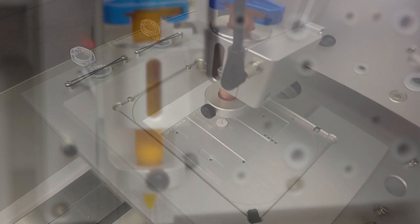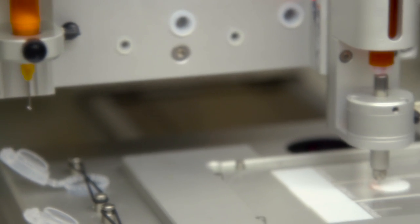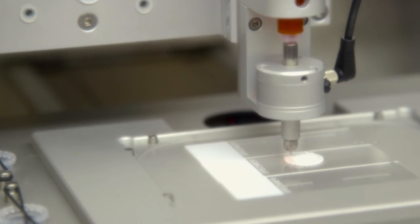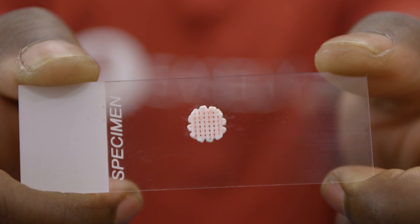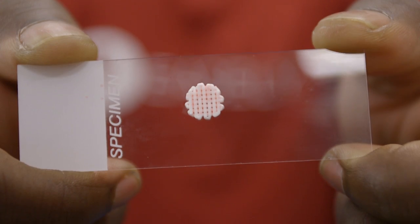Now we can print organs and tissues outside of the body that have these small blood vessels in them, and when we implant those tissues they'll be able to engraft into the patient and perform their function.